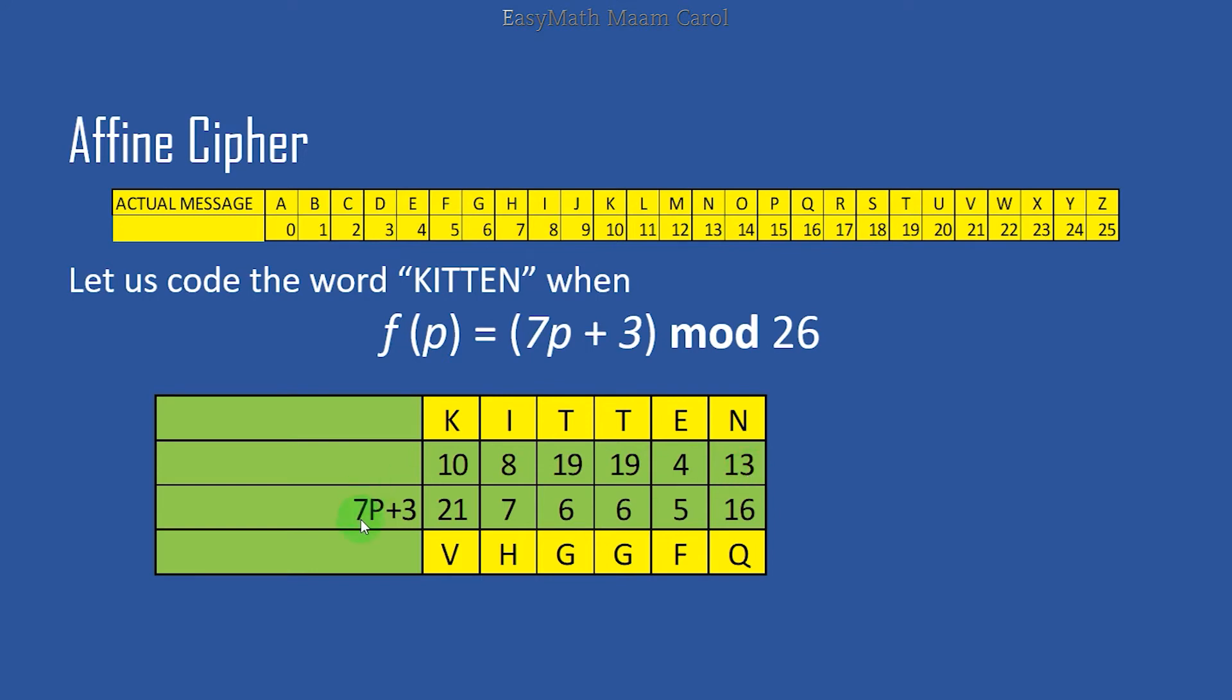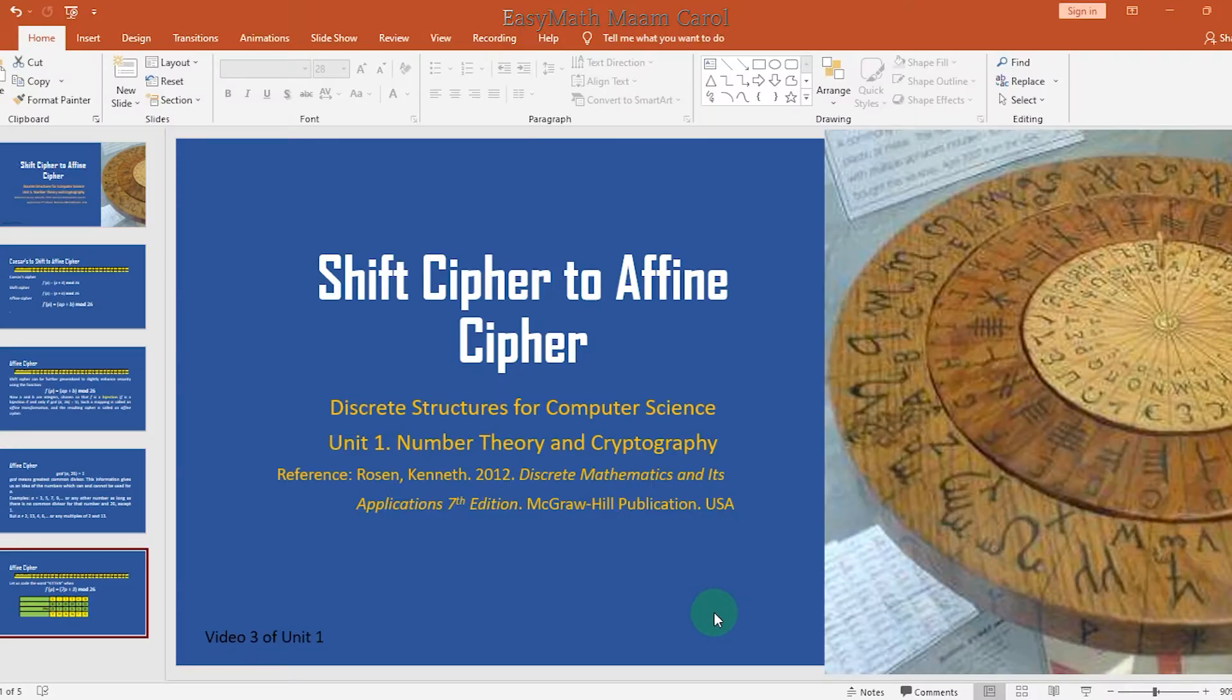Now, what you will use in Excel is this formula. And you will get a new number. And then you can just translate it into V, H, H, G, G, F, and Q. Because those are the numbers that were placed there. So the coded word kitten became V, H, G, G, F, Q. So now I will show you the computation in Excel because it's easier to compute there.